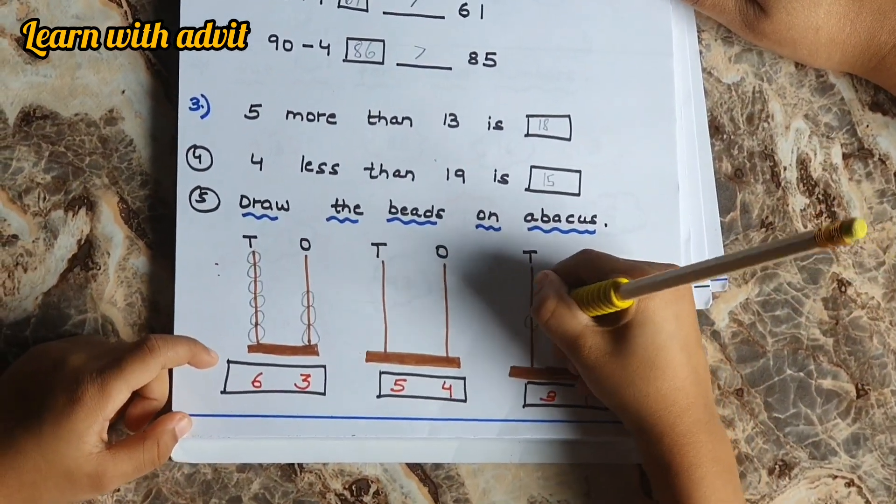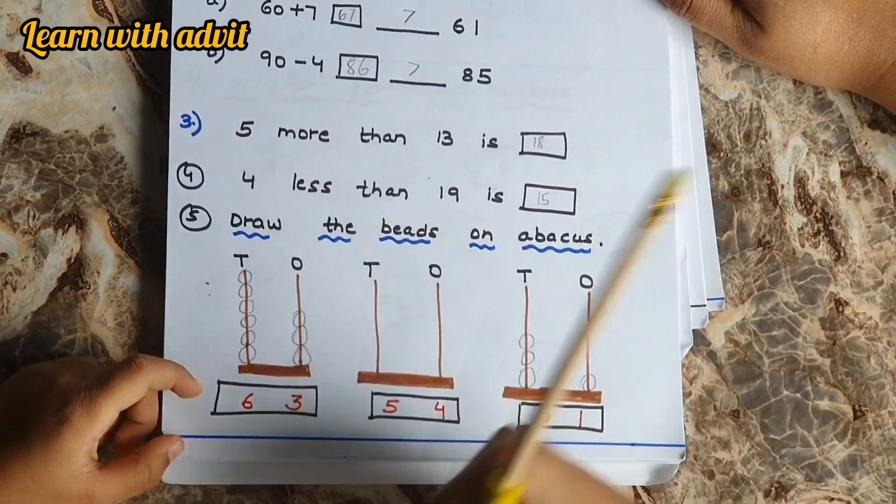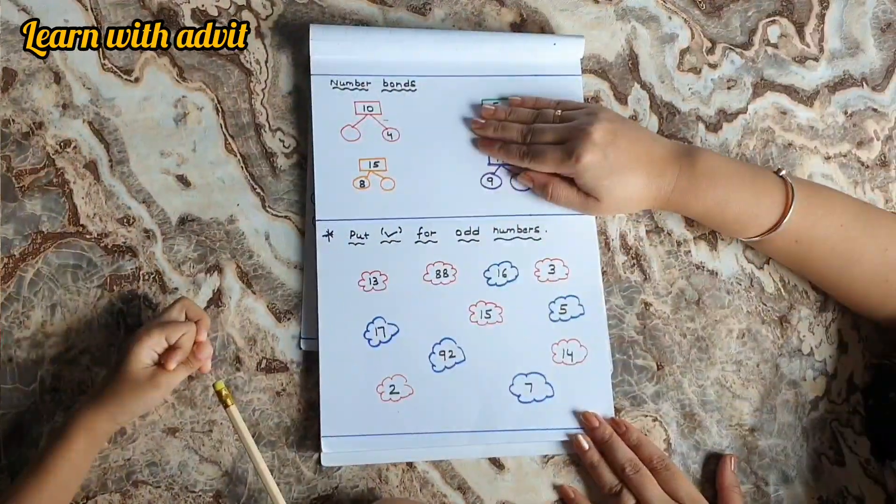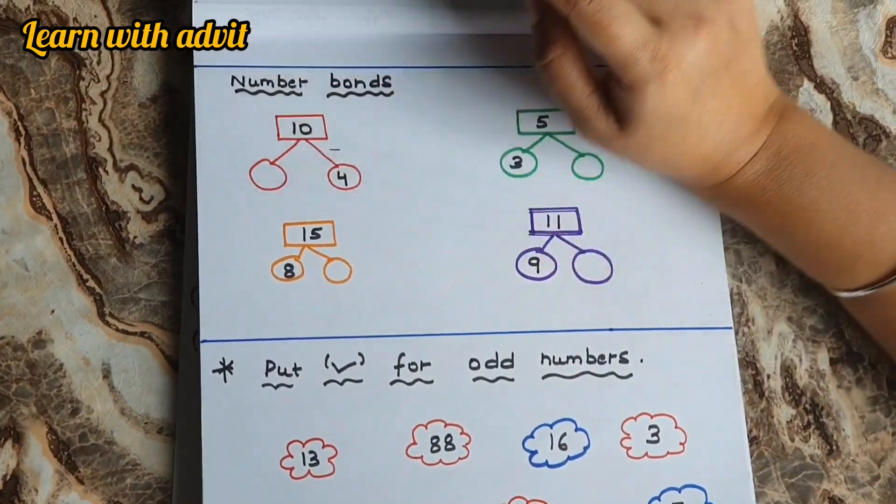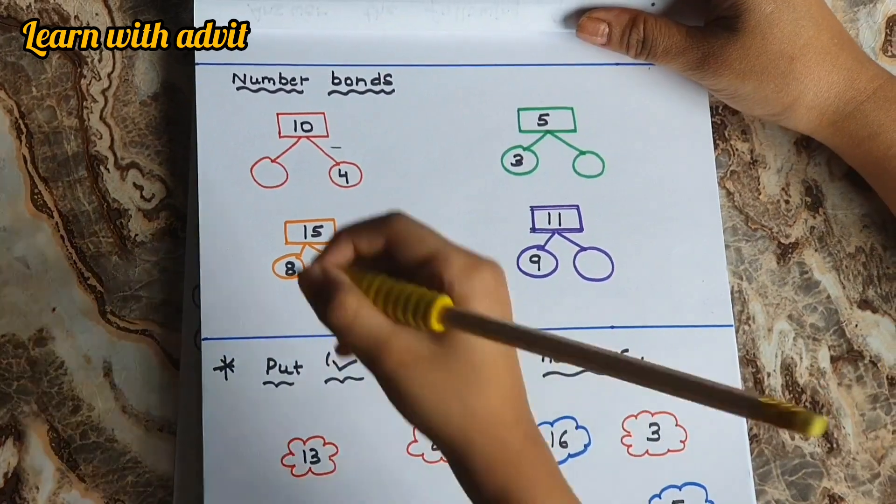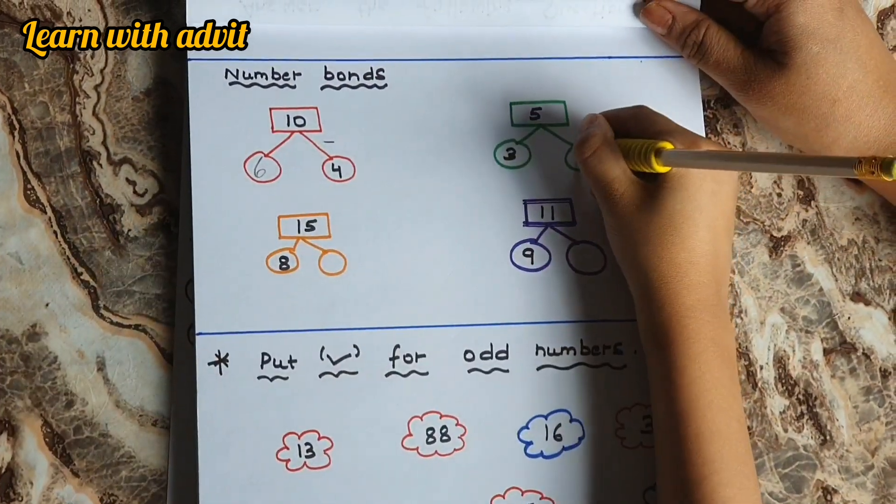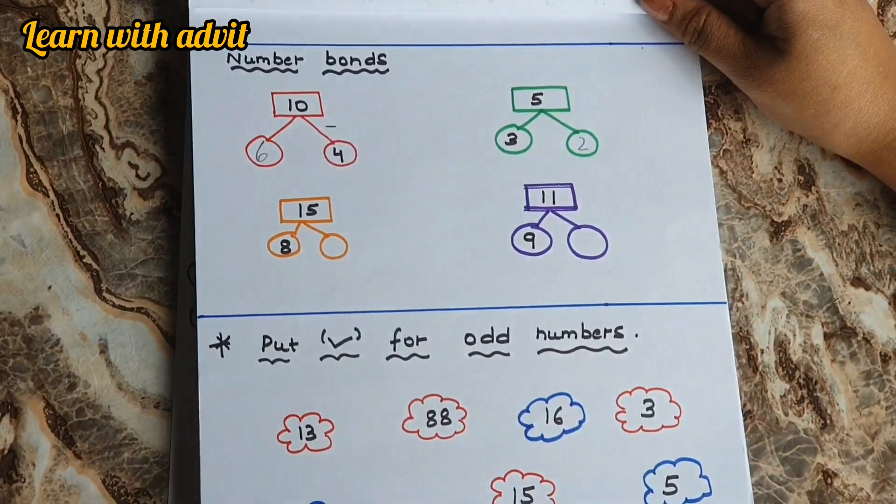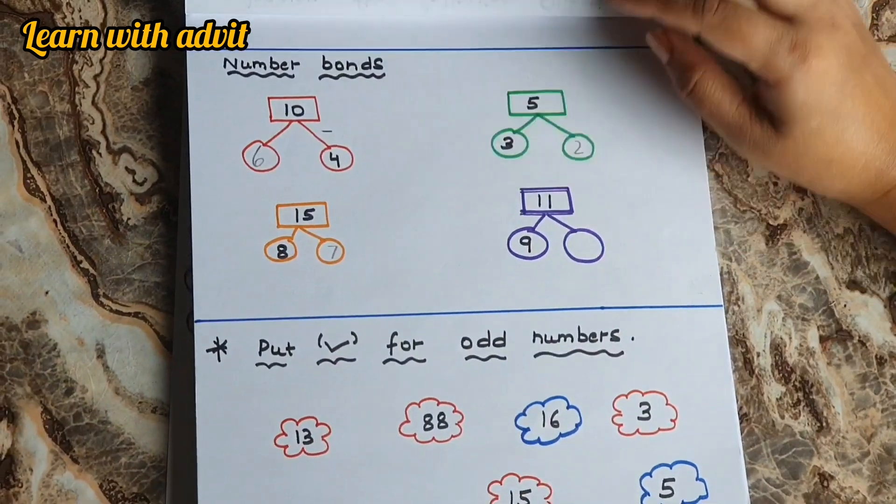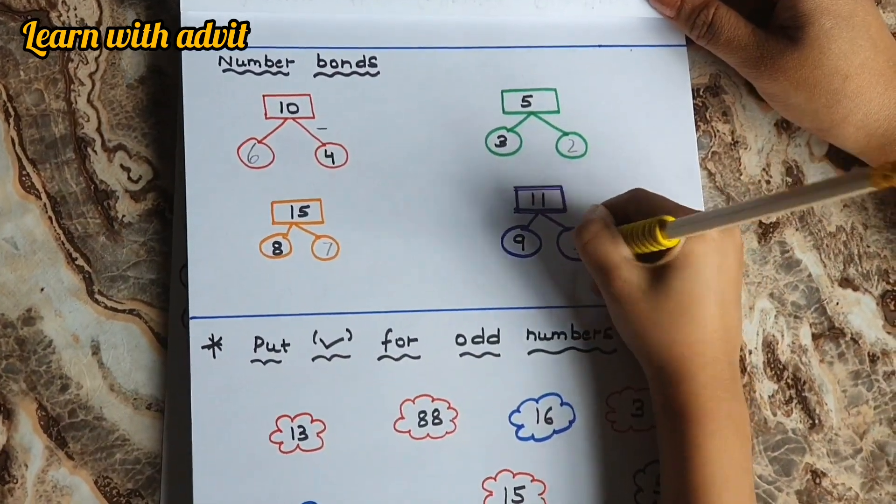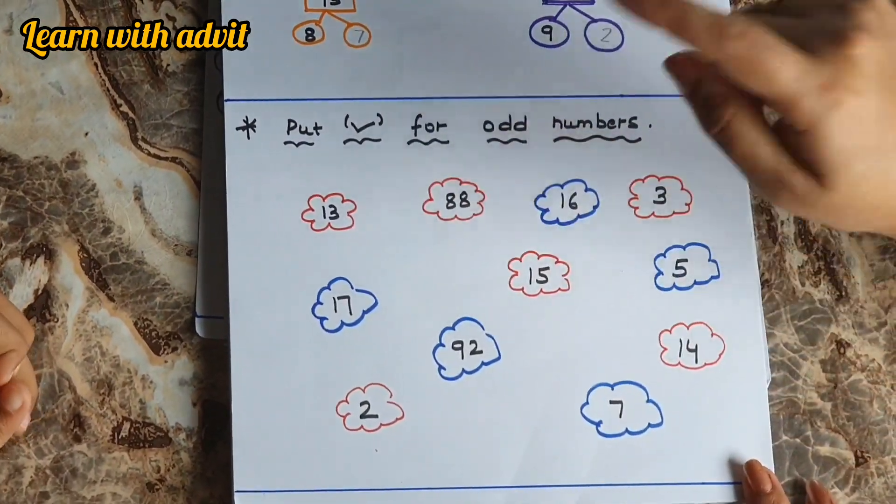So this is number one. You have to look 1, 2, 3, 4 here and solve it here. For 10: 6 plus 4 is 10. For 5: 8 plus 2. For 15: 7. For 11: 9 plus 2 is 11. So here are some random numbers. You have to pick the odd number.